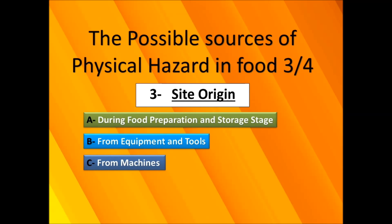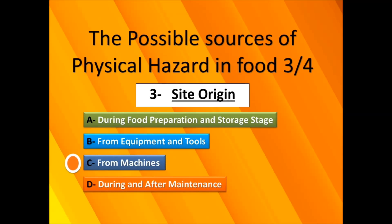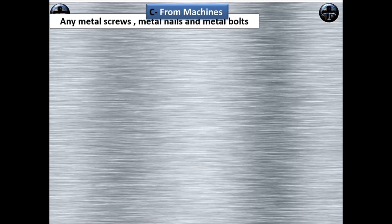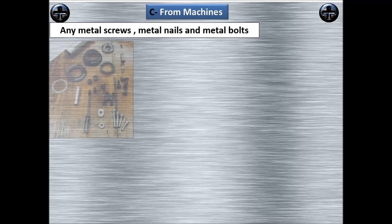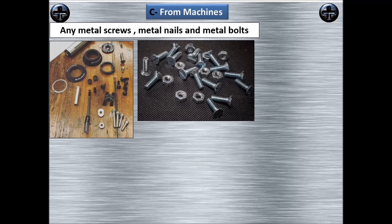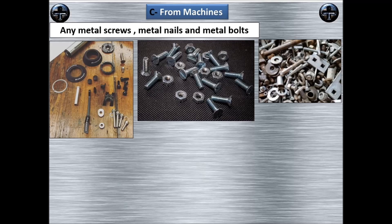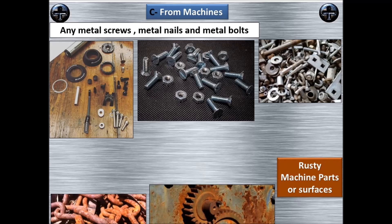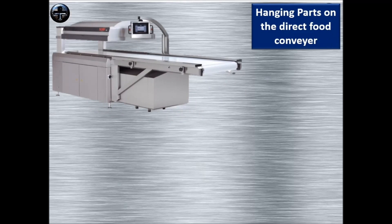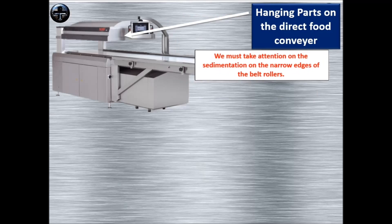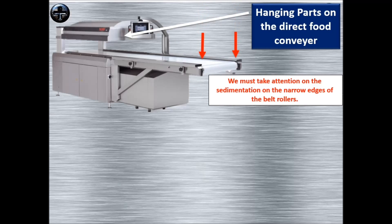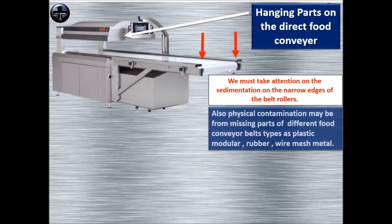From machines, physical contamination may be due to metal screws, metal nails, and metal bolts present, or from rusty machine parts or surfaces. Also from the machine, physical contamination may be from hanging parts on the food direct conveyors, and also from the sedimentation on the narrow edges of the belt rollers. We must take attention on this part.